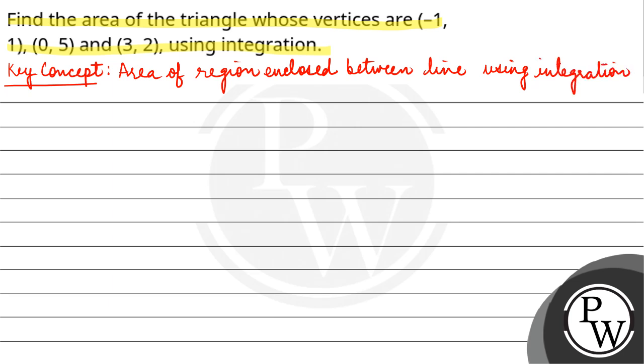So here you have 3 points. Consider it. (-1, 1) is A, (0, 5) is B, and (3, 2) is C. First of all, we will plot it.